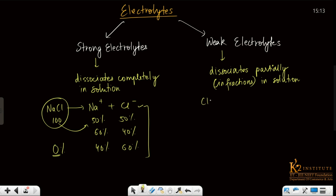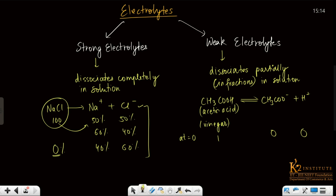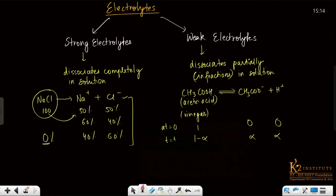Now let us talk about weak electrolytes. Let us take CH₃COOH, which is defined as acetic acid — a very famous example. Acetic acid dissociates only in fraction. If you have initially 100 percent acetic acid, let us say one mole, at time T some percentage of acetic acid is reduced and the percentage of the two ions is produced. The fraction that is dissociated is called alpha, which is also called the degree of dissociation.